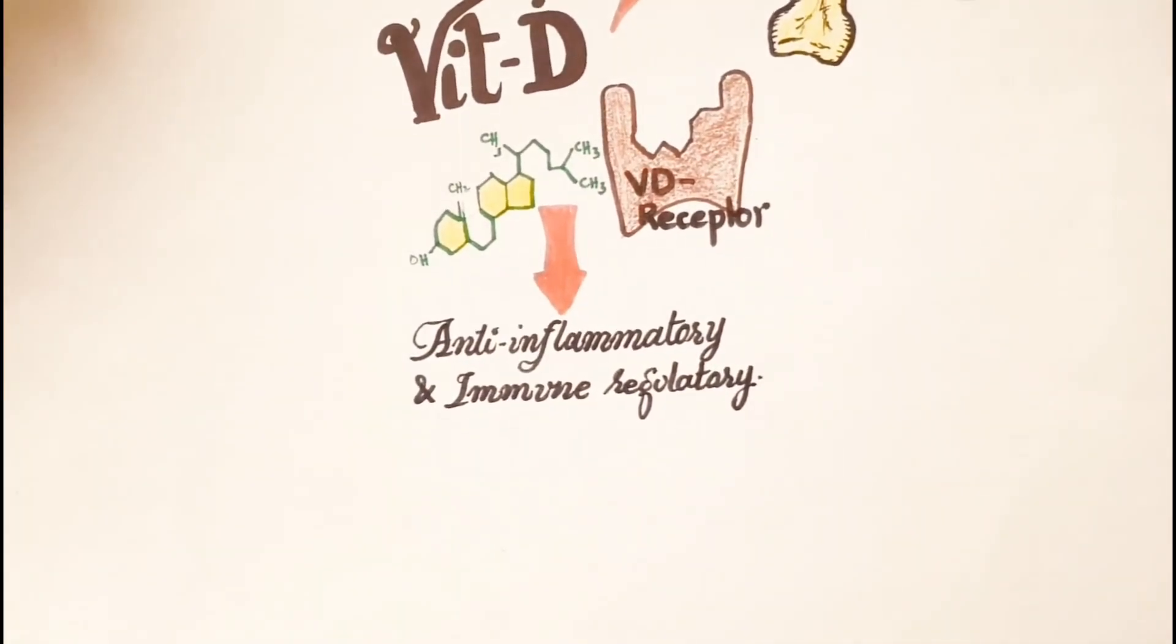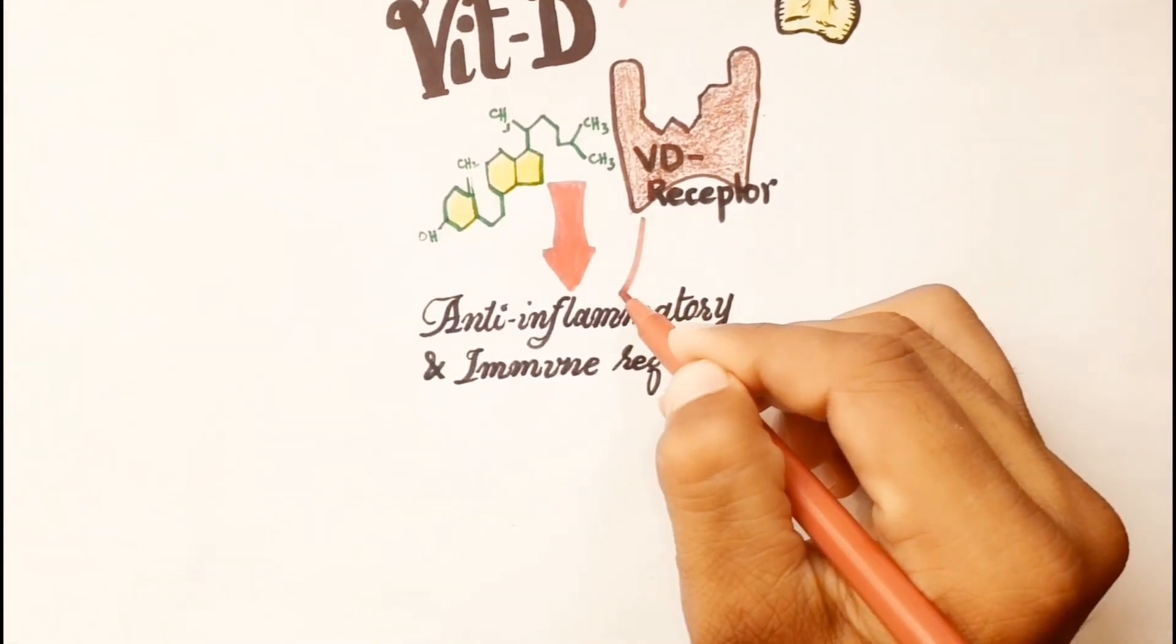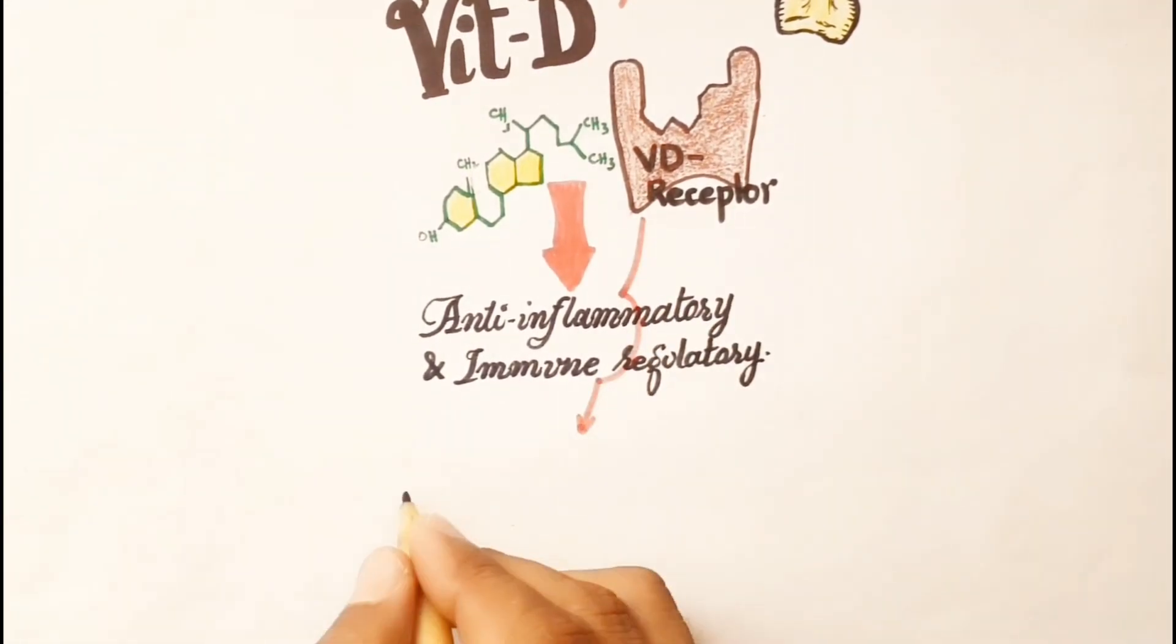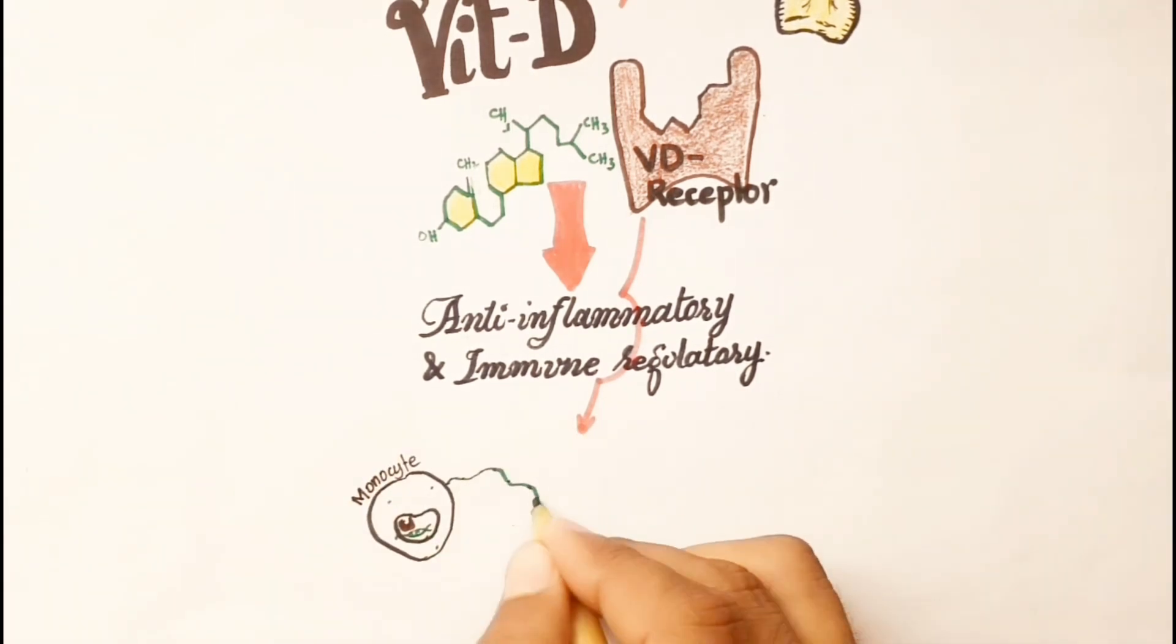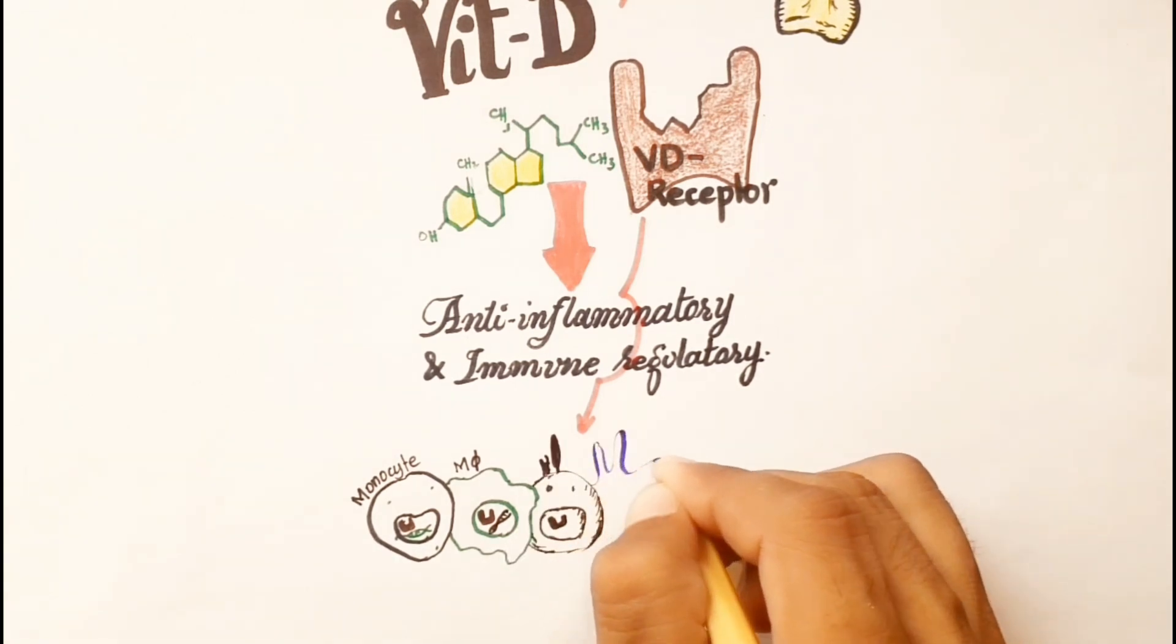Vitamin D receptor is expressed by several types of immune cells, including monocytes, macrophages, B and T lymphocytes, as well as dendritic cells.